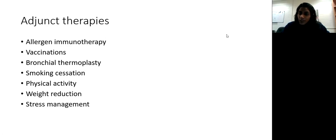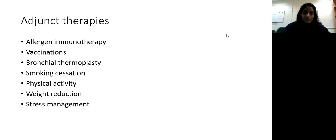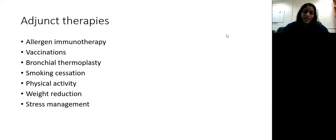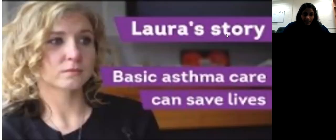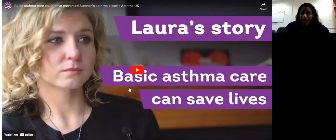Additional considerations for asthma patients: always discuss allergen immunotherapy, especially if they have a positive allergy panel or significant identified allergens. Vaccinations are key, given these patients are more prone to viral infections and related mortality. Bronchial thermoplasty is a newer modality for severe persistent asthma — roughly one-third improve, one-third stay about the same, and one-third may worsen. Smoking cessation, physical activity, weight reduction, stress management, and physical rehabilitation are all important parts of comprehensive asthma management.